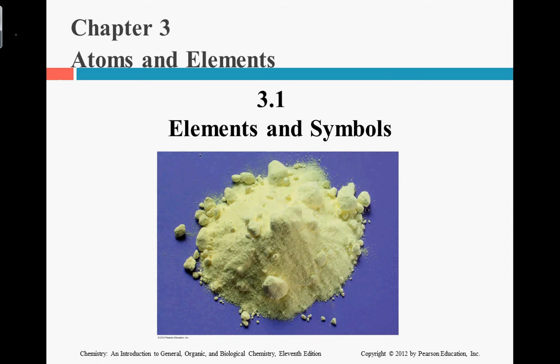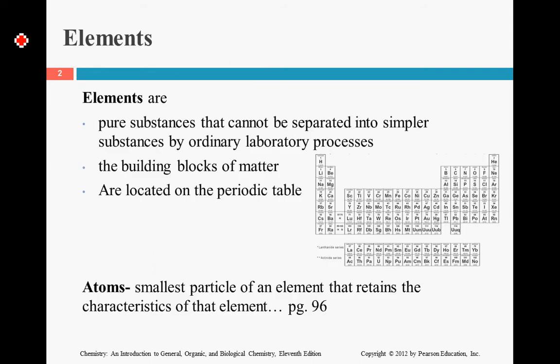We are now going to discuss sections 3.1 and 3.2, Elements and Symbols on the Periodic Table. Elements are pure substances that cannot be separated into simpler substances by ordinary laboratory processes.